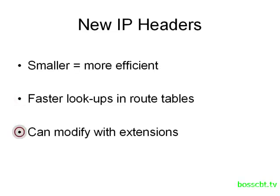We can add information to the IP packet through something known as an extension. These are just fields that we can add or remove from the IPv6 header depending on our needs, so in a way this new header is customizable. It's because the IPv6 headers are so different from the version 4 headers that the two protocols are not interoperable.